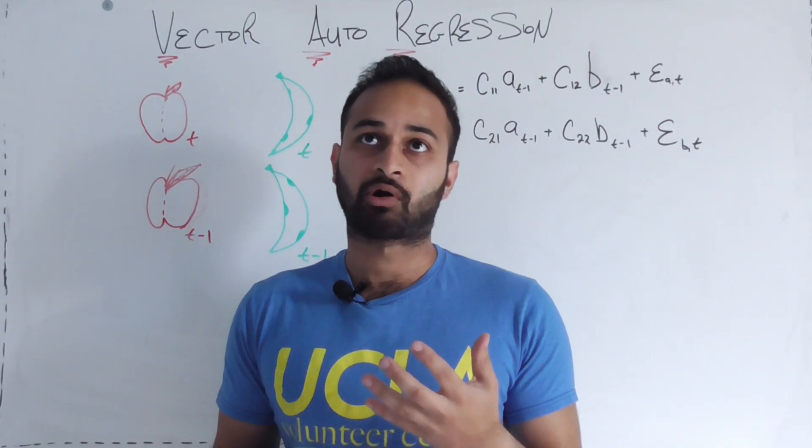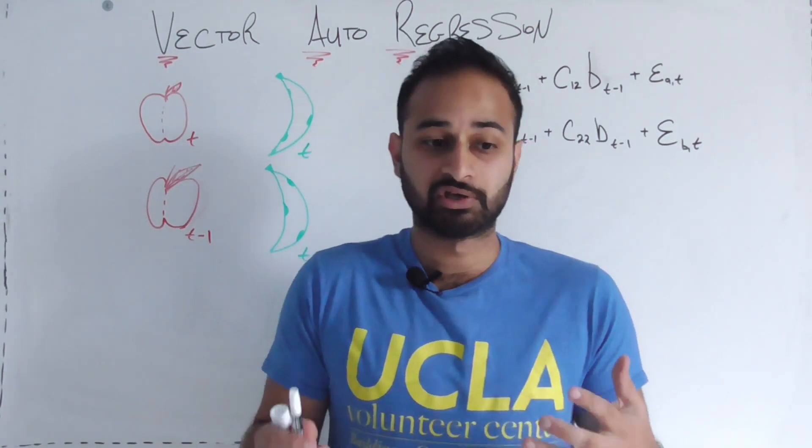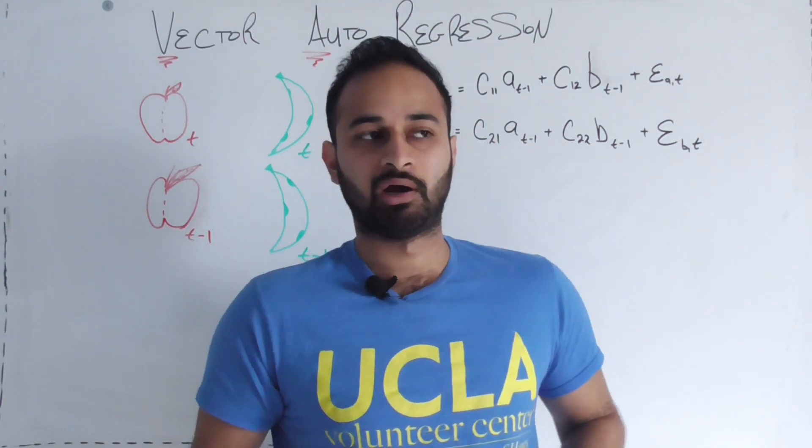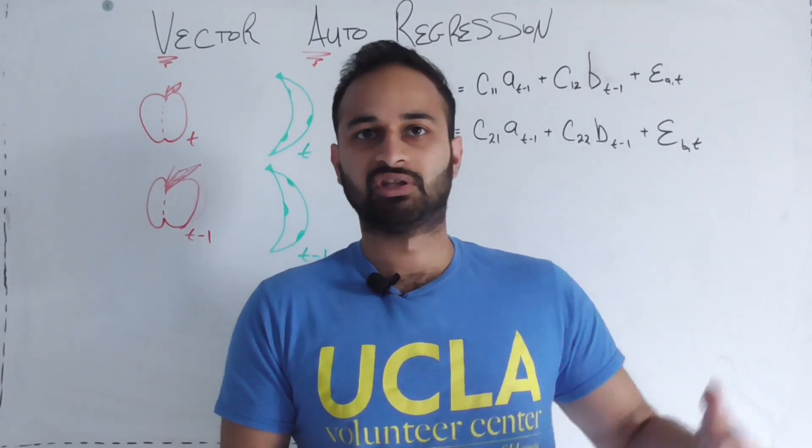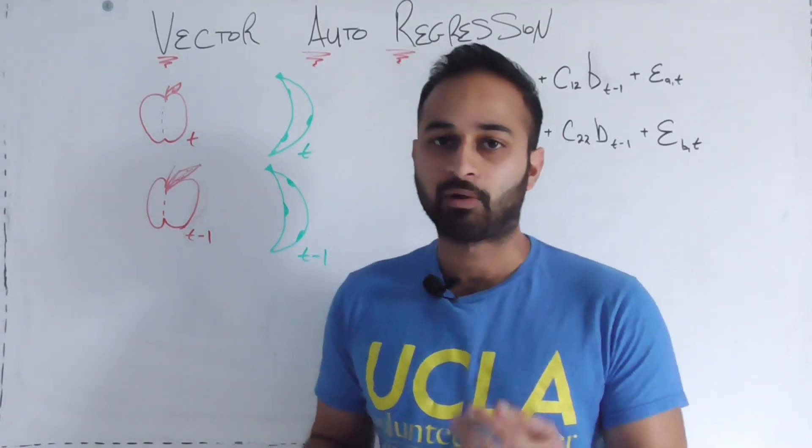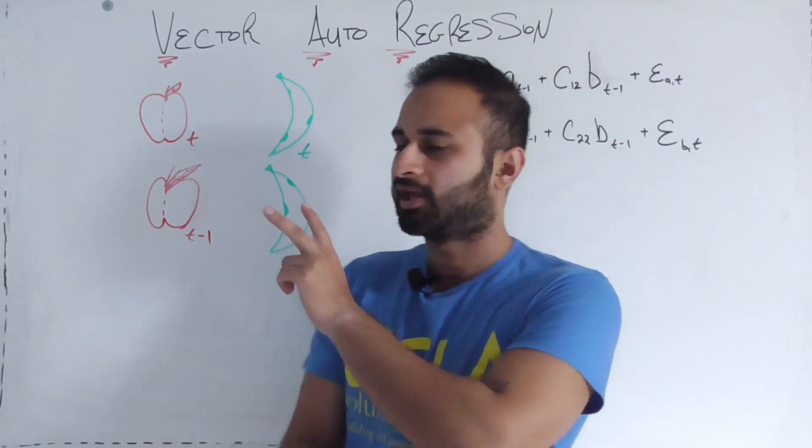This is already how vector autoregression differs from previous time series videos. Before we were just concerned about one variable, like movie sales in the past month or sales of anchors for your boats. Now we care about two different variables and the interactions between them.